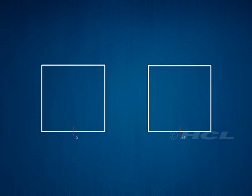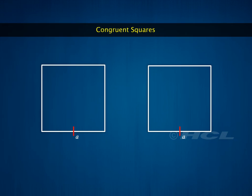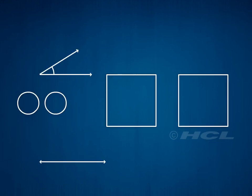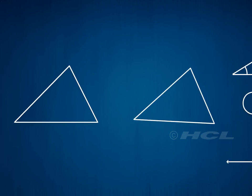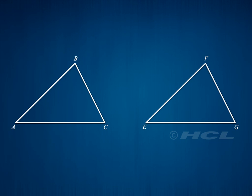Two squares are congruent if they have the same side length. Two triangles are congruent if their corresponding sides and angles are equal.